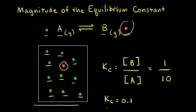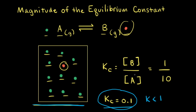The magnitude of the equilibrium constant tells us about the reaction mixture at equilibrium. For this reaction, Kc equals 0.1, so K is less than 1. Since K equals products over reactants, a K less than 1 means we have a smaller numerator and larger denominator, which means there are more reactants than products at equilibrium.